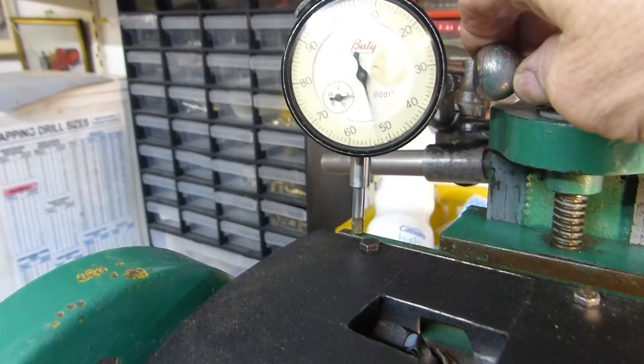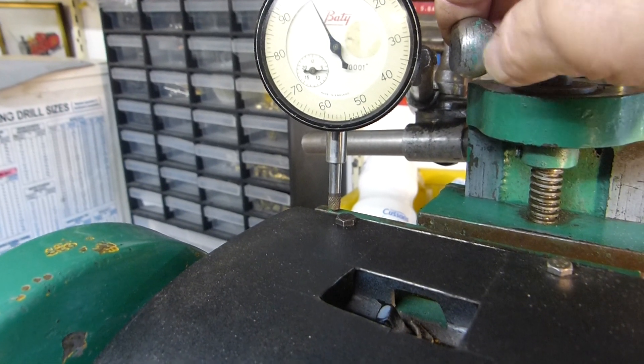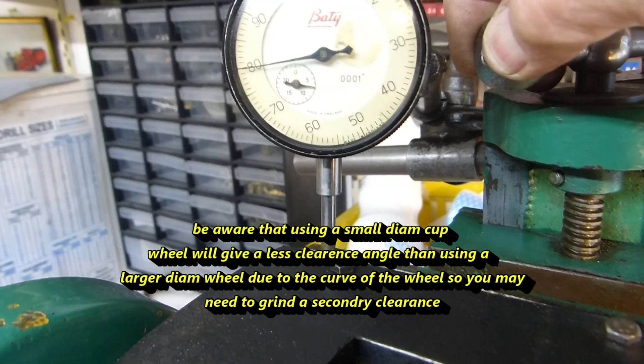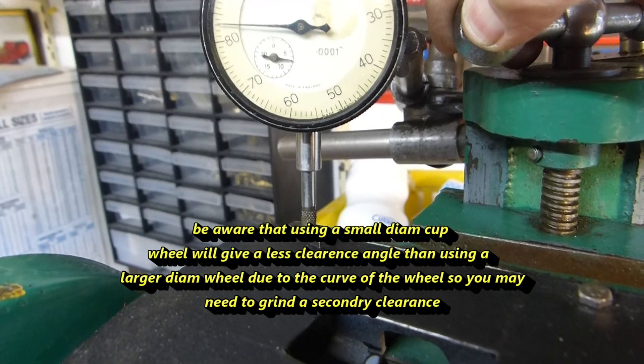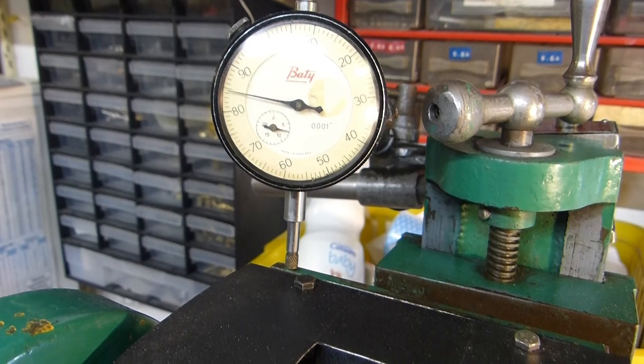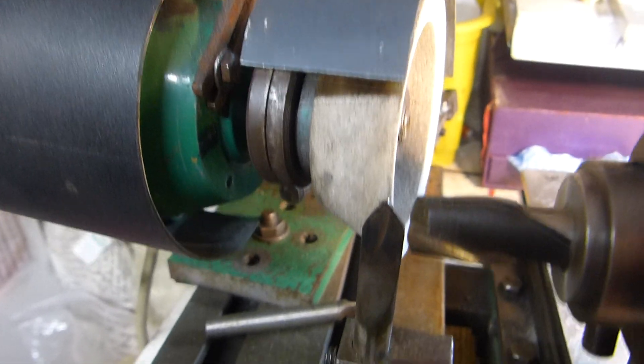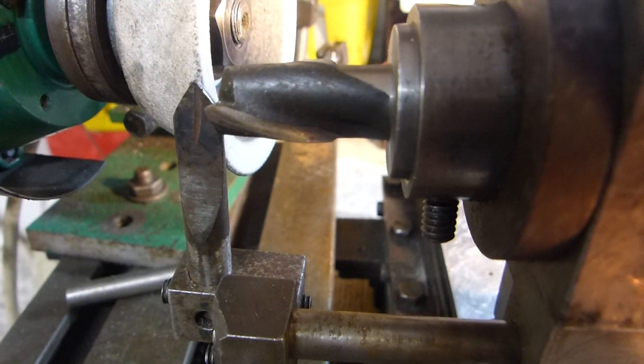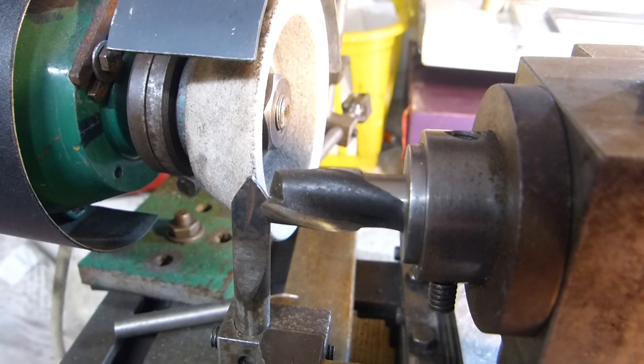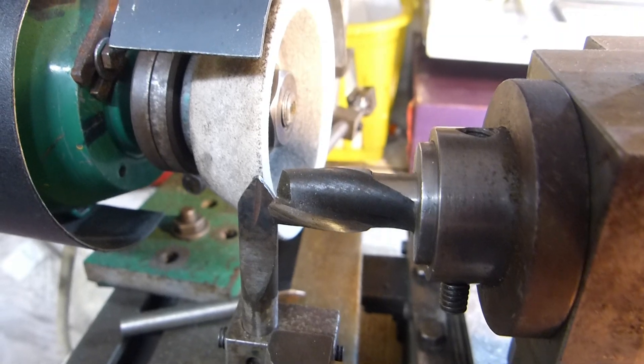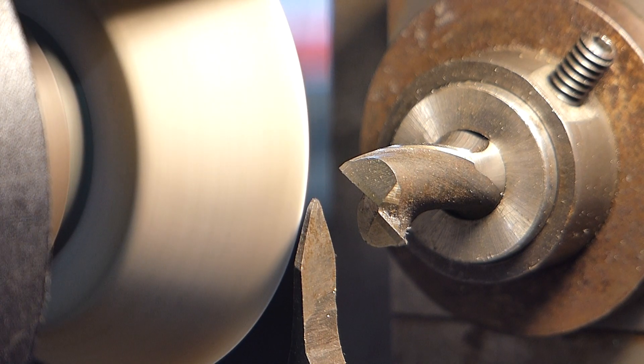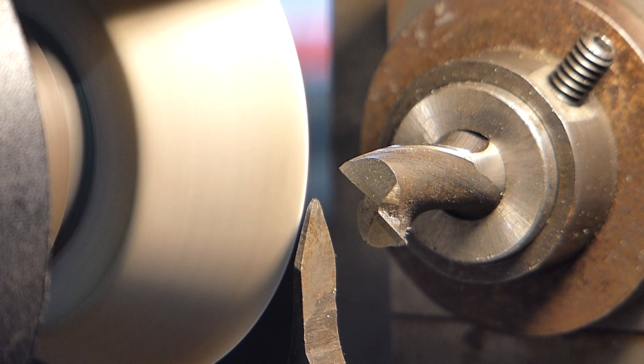I'm just now raising the wheel head by 182 thou and that should give me seven degree clearance according to the calculations. As I mentioned in my previous video on doing the end mill, I don't have a graduated collar on this slide so I'm having to use my dial indicator. In fact, one of the next projects is to get some collars made and engraved on my dividing head. I also really need one on the cross slide on the cutter grinder table.